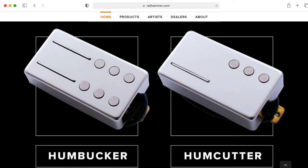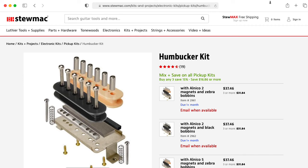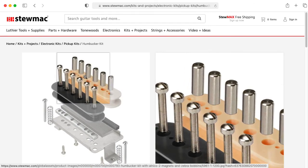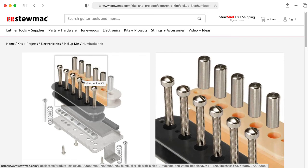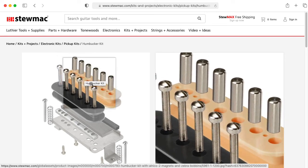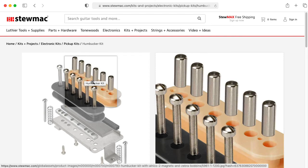I should mention that in a lot of traditional humbucker designs where you have adjustable height pole pieces, usually only one of the coils has adjustable height pieces, and the other coil just has fixed height slugs.